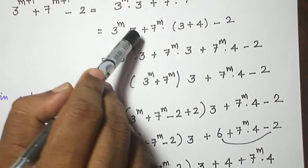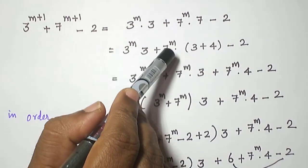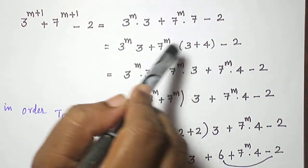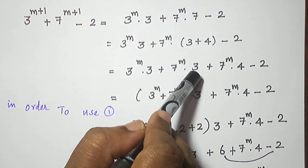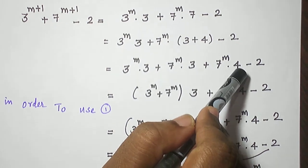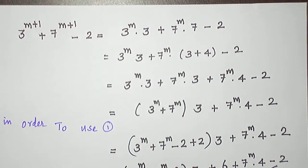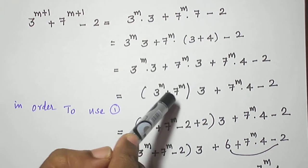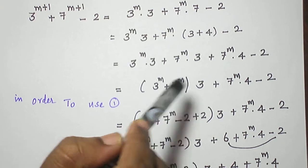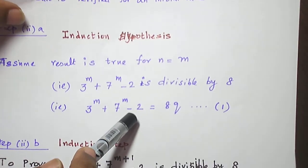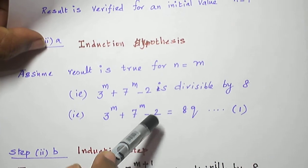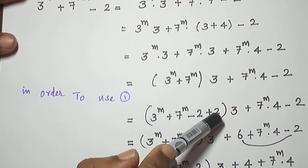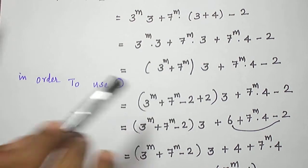We have 3 power m into 3. I am going to write 7 as 3 plus 4, so that when I multiply 7 power m inside the bracket, I will get 7 power m into 3 plus 7 power m into 4. Now I combine these two terms by taking 3 in common, giving 3 power m plus 7 power m. Still one more term is missing — minus 2 — so I am going to subtract and add that minus 2, just to use equation 1.